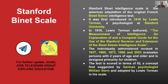The Binet-Simon test began in 1905, with revisions in 1905, 1908, and 1911. After that, the Binet-Simon test was adapted by Lewis Terman, which became the Stanford-Binet Scale. He was at Stanford University, so he used 'Stanford' in the name, combined with Binet's name — which is why it's called the Stanford-Binet Scale.